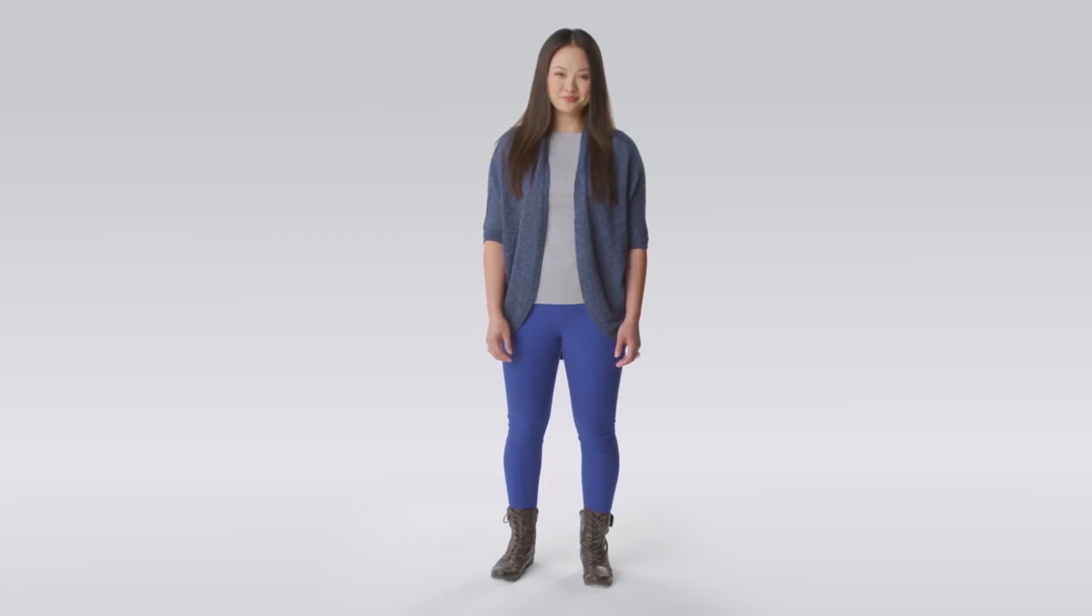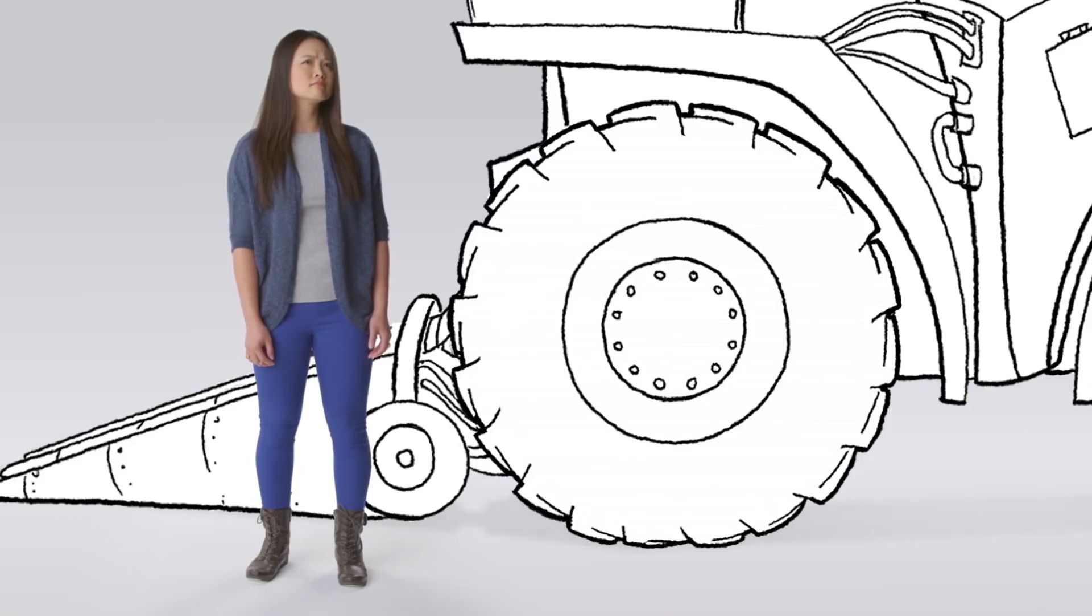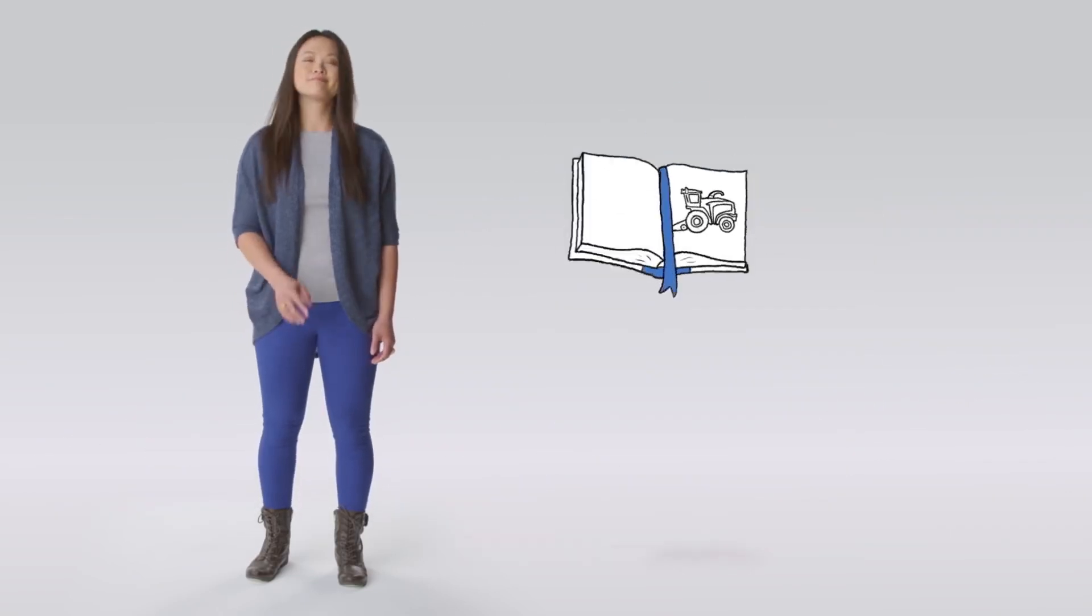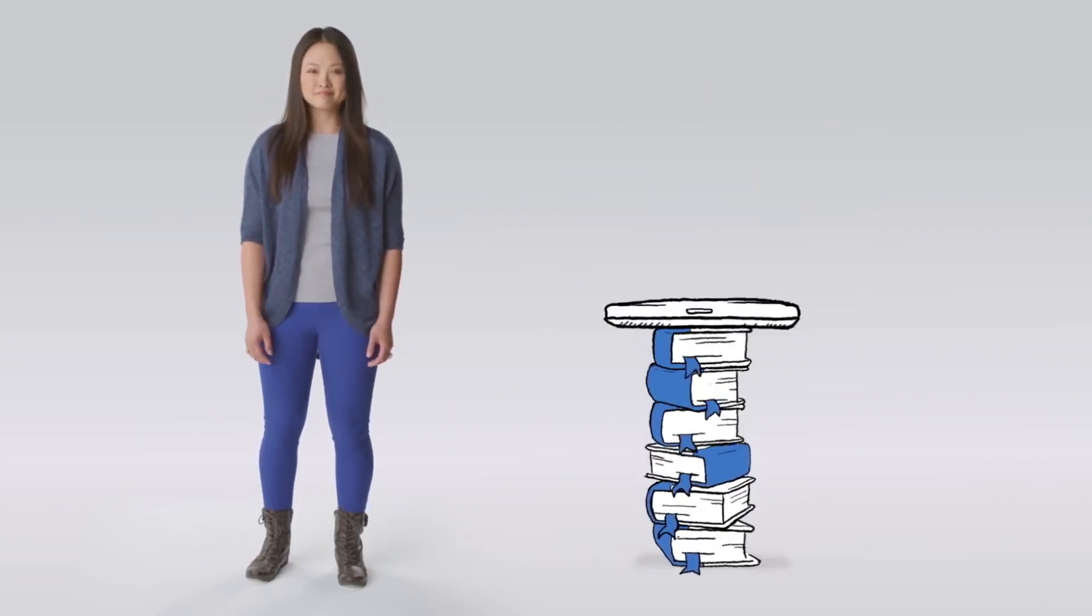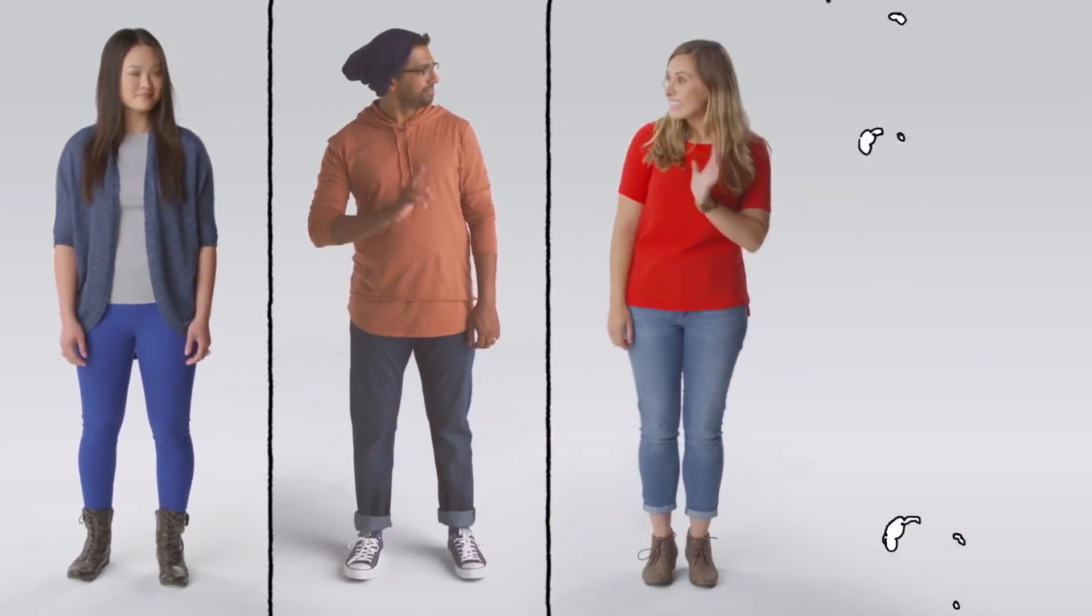This is Sam. Sam works on tractors all day, but not in the way you might be thinking. She builds the software that helps make tractors more efficient, and she does this on GitHub with the help of her team, Vijay, Melinda, and Mike.